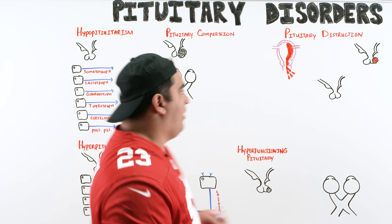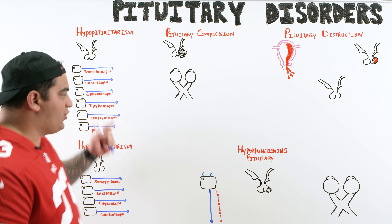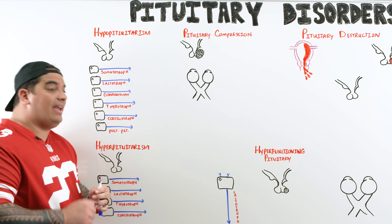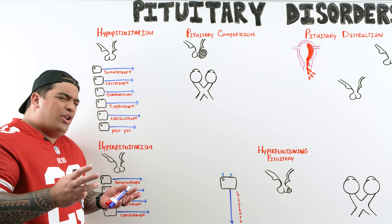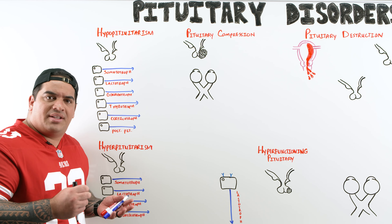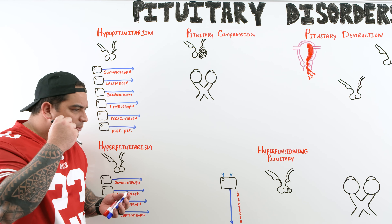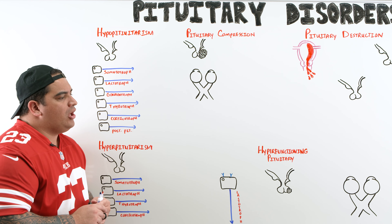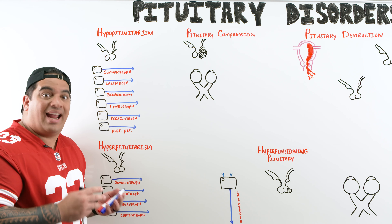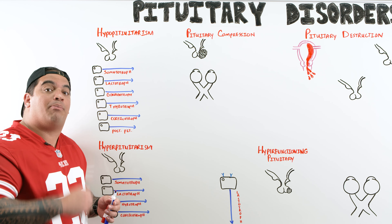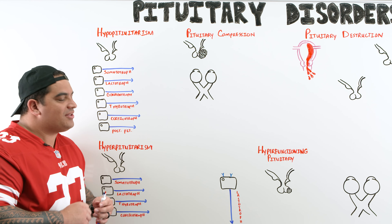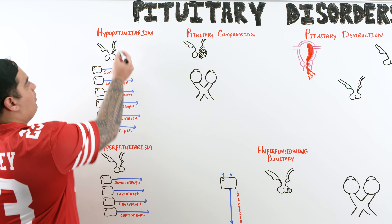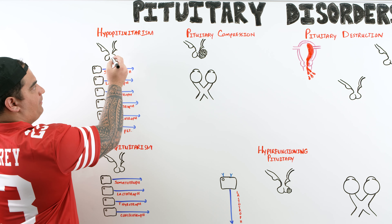There are two types of pituitary disorders. Hypopituitarism is when you're not making enough pituitary hormones. The pituitary is the master endocrine gland, responsible for producing tons of stimulating hormones. If the anterior and posterior pituitary stop being able to produce these hormones, there are a lot of derangements that can result.